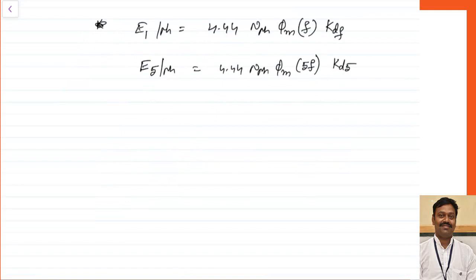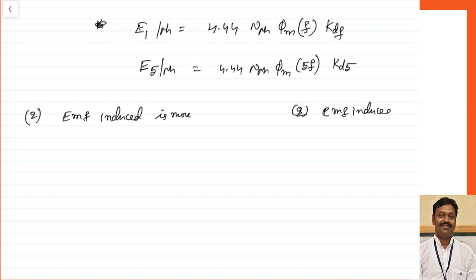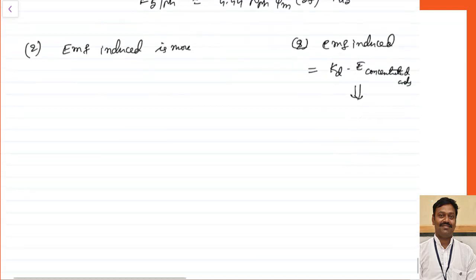The major difference between concentrated and distributed winding: in the case of concentrated winding, the EMF induced is more — equal to the full formula — whereas in distributed winding, EMF is less than that of concentrated winding because it is multiplied by Kd, the distribution factor.